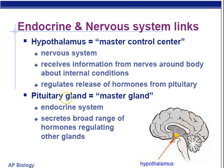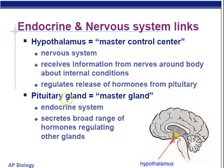The pituitary gland is very close to the hypothalamus and receives information directly from it. This is also called the master gland, and you need to know that. It's part of the endocrine system only — while the hypothalamus was part of the nervous system, the pituitary gland secretes a broad range of hormones regulating other glands.